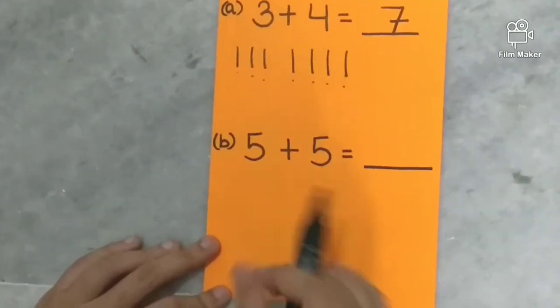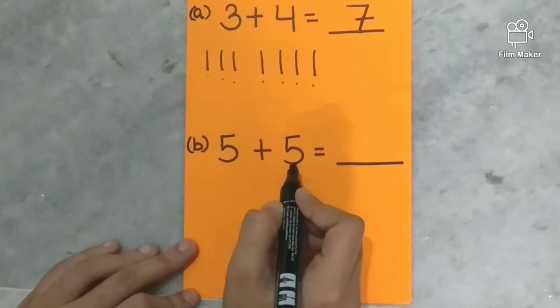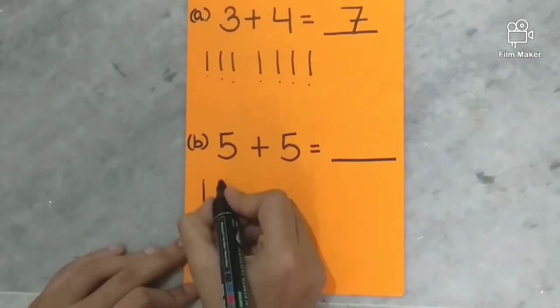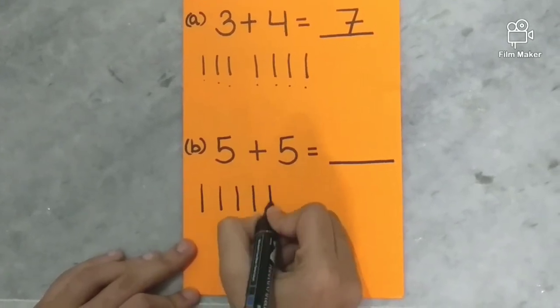One more example. Five plus five. Again we will draw five lines first. One, two, three, four, five.